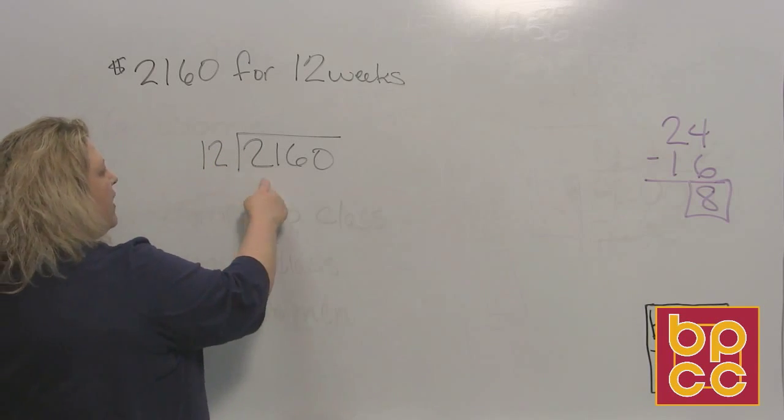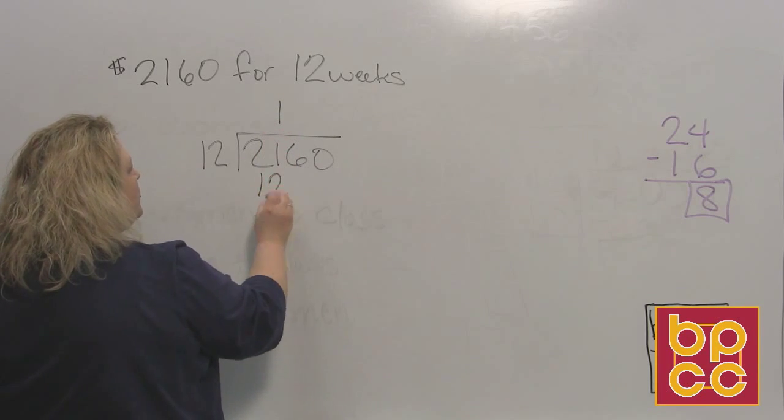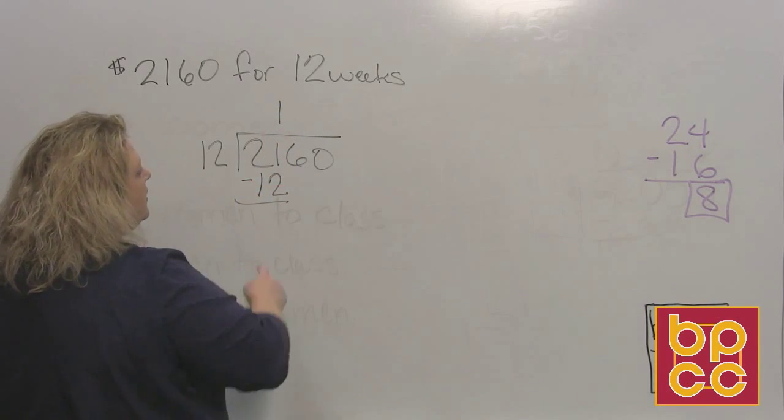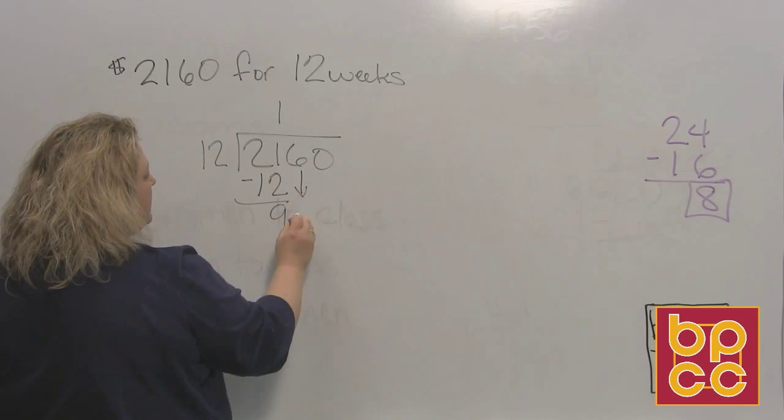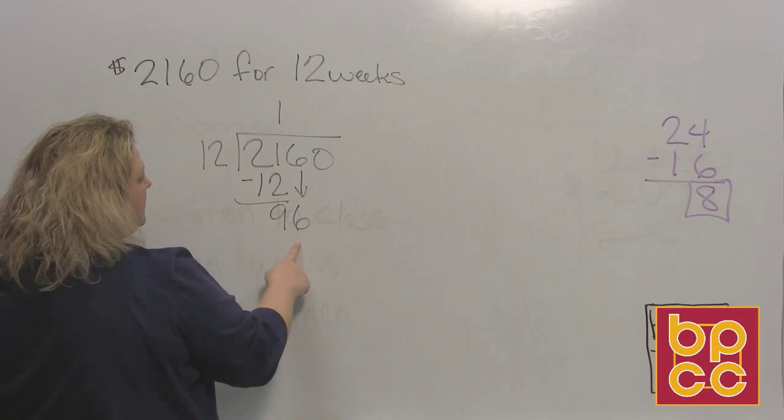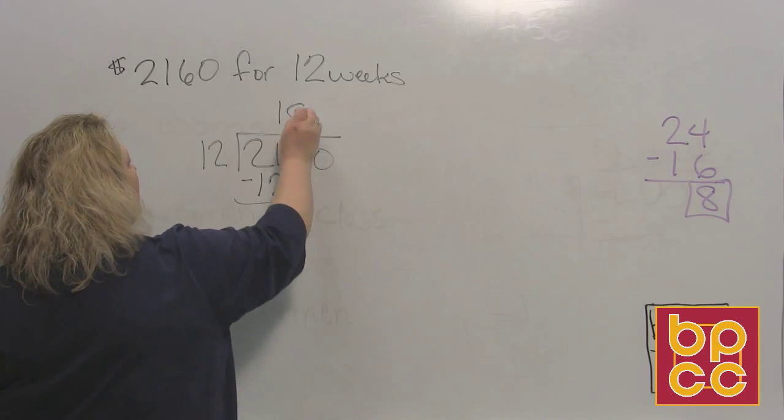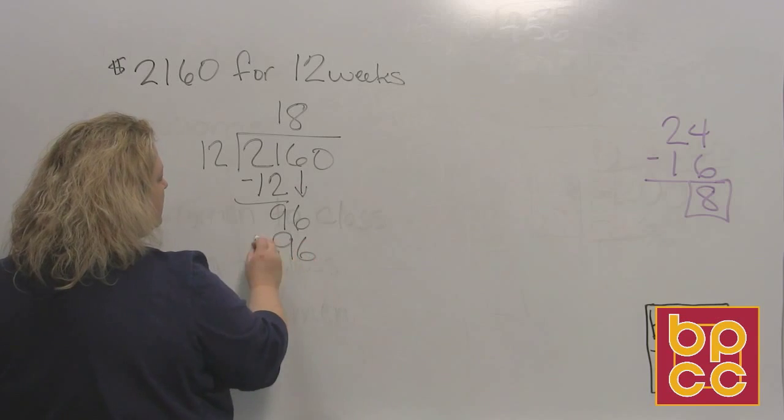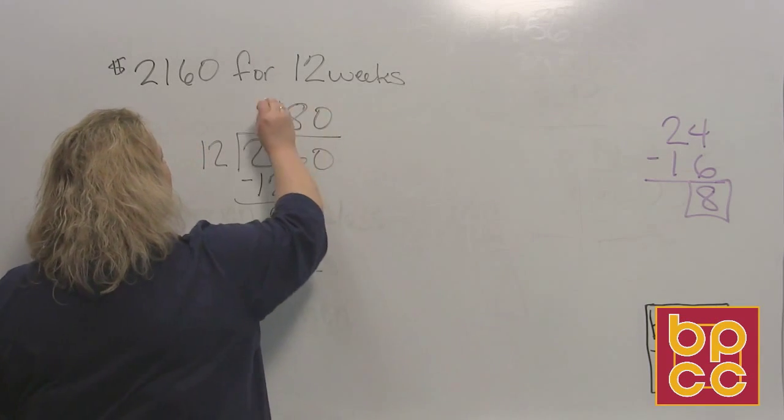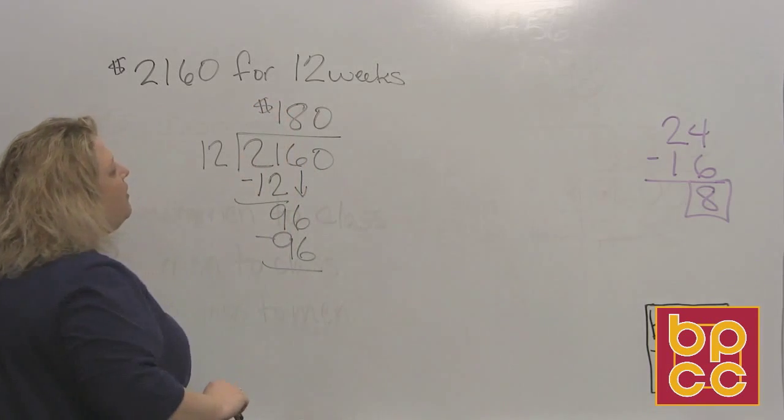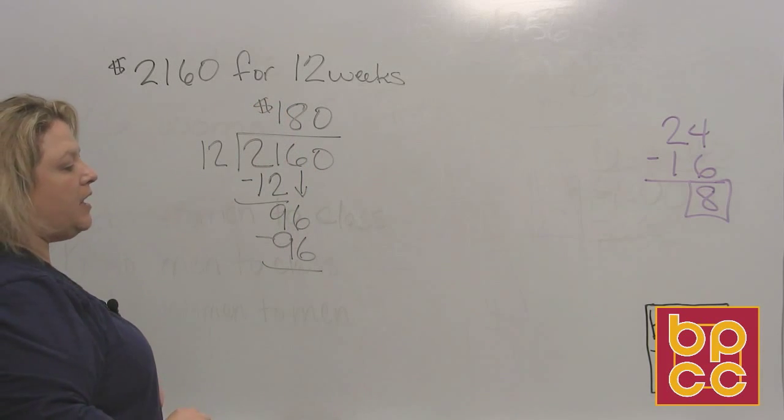So 12 divides into 21 one time, which makes 12. And when we subtract, we get 9 left. Bring down the 6. 12 divides into 96 eight times, which exactly makes 96. But because we have this one digit left over, we have to put the zero up there because everybody's got to be accounted for. So that's $180 a week.